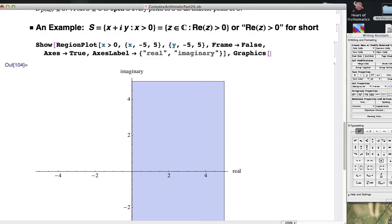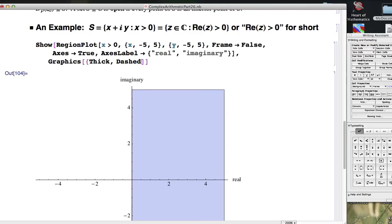And it does not include the imaginary axis, so we should also perhaps add in through show and graphics, for example, a line, a dashed line, that indicates that that imaginary axis is not part of the set. We get thick dashed line.